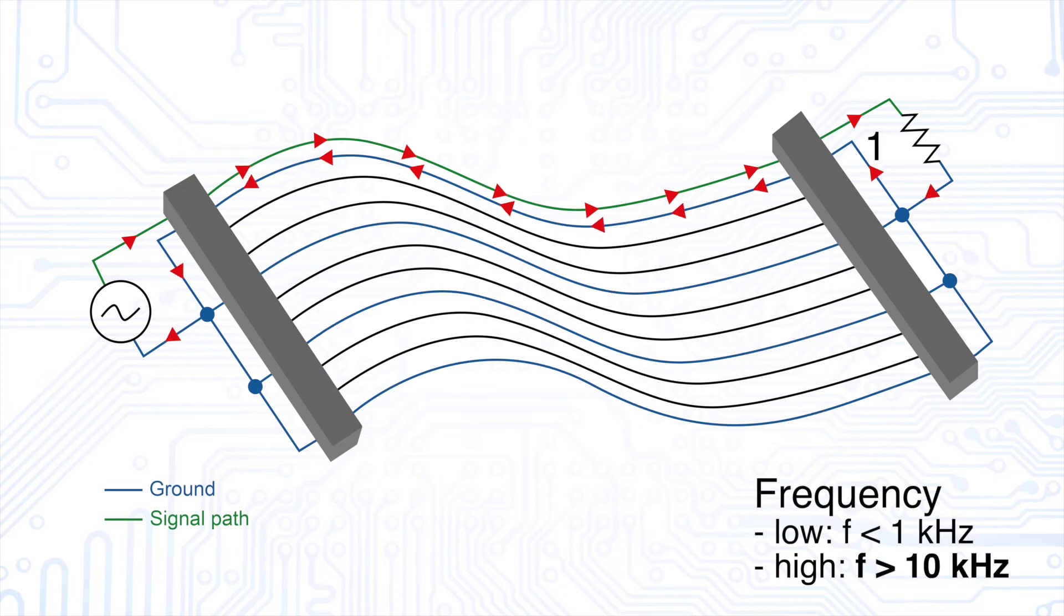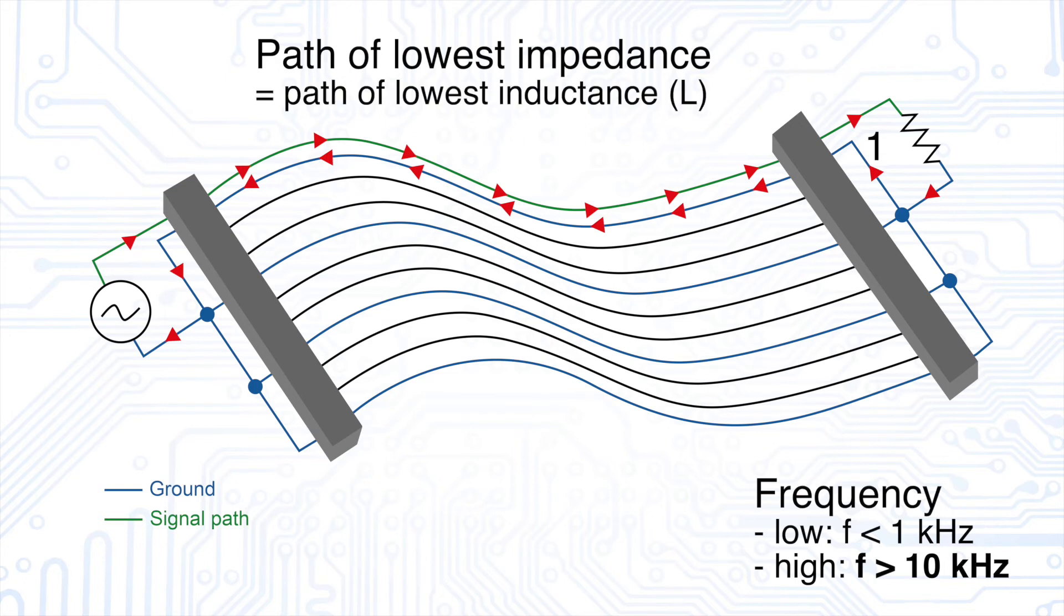The reason for this is that current always chooses the path of lowest impedance. For our return current, this usually means the path with the lowest inductance because the ohmic value is low anyway. And the path with the lowest inductance is usually the one with the smallest loop area.